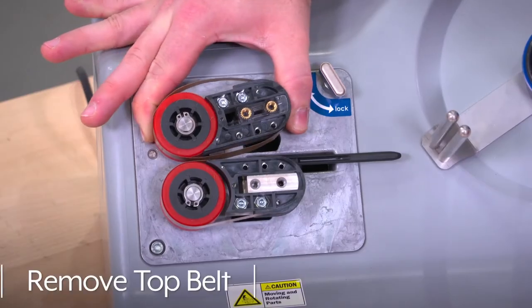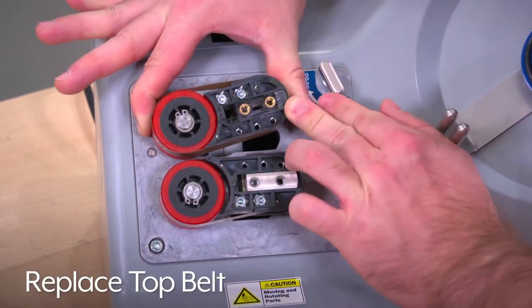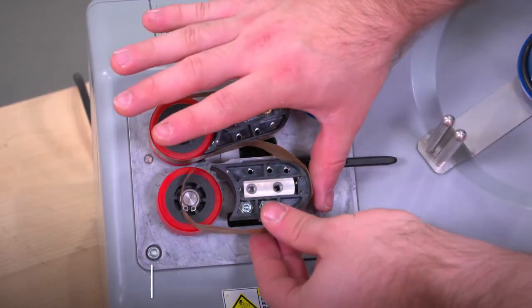Push the top sealing unit to the left and remove the Teflon belt and replace it with a new belt. Now push the bottom sealing unit to the left and replace its Teflon belt.